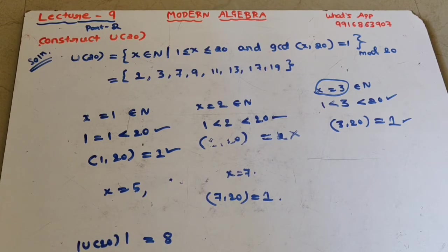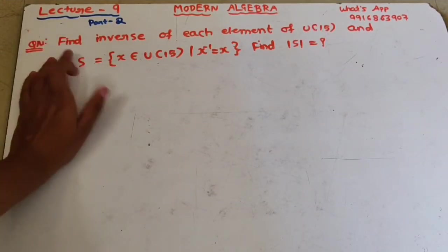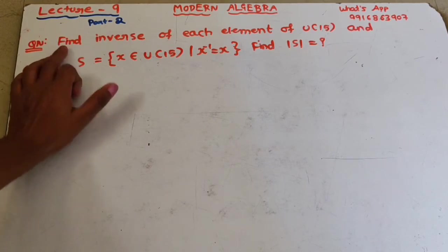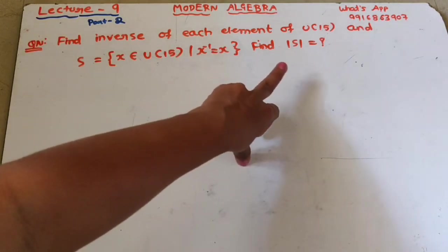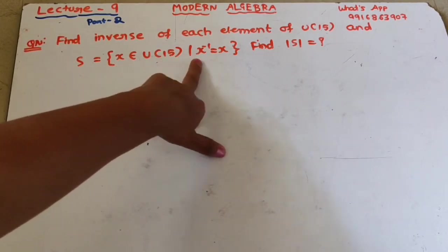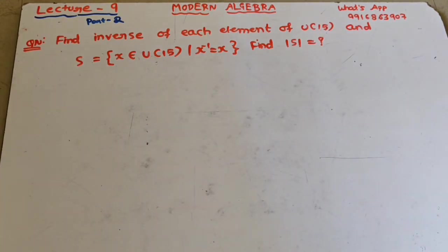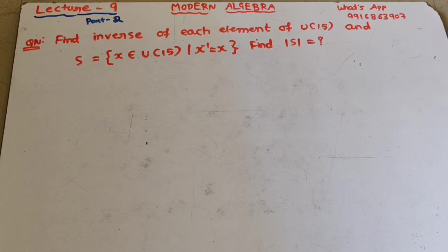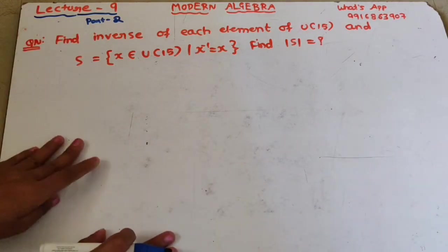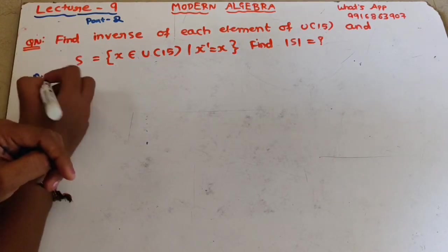Now let us see the second example. The question is: find the inverse of each element of U(15), and find the set S = {x ∈ U(15) : x⁻¹ = x}, then find the cardinality of S. To do this, first we construct U(15).